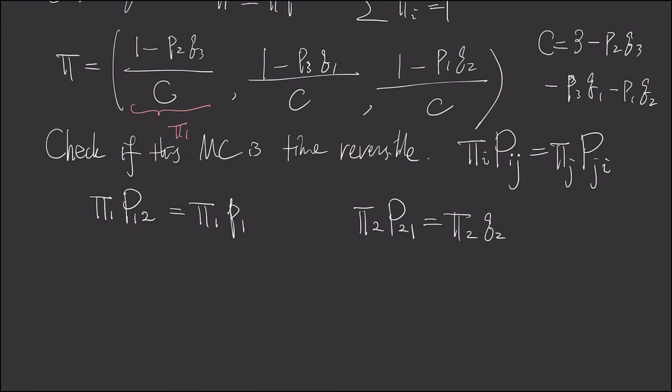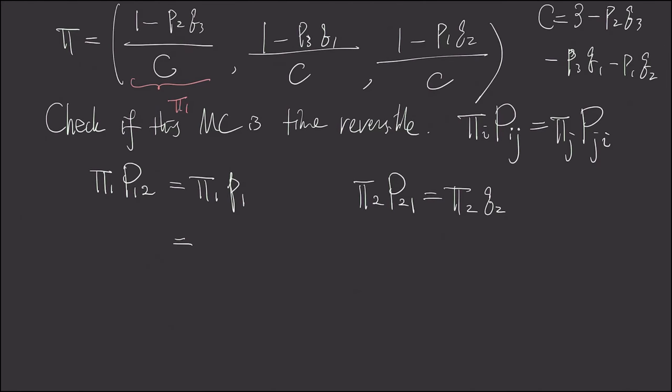And if we expand this term in more detail, we'll see this is nothing but 1 over C times P1 subtract P1 P2 Q3. And if we expand the second term, we'll have this is 1 over C times Q2 subtract Q2 P3 Q1.